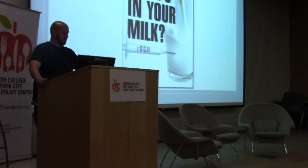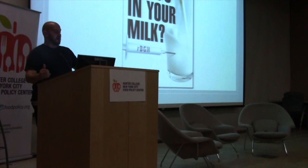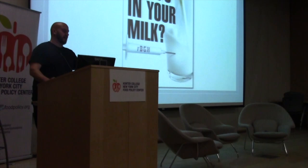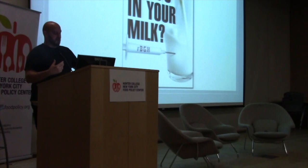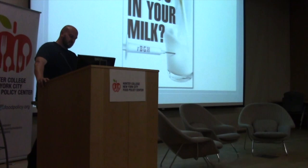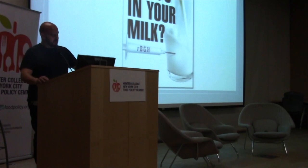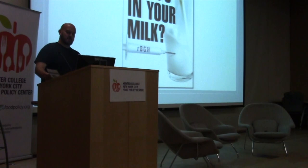Recombinant bovine growth hormone is one of many steroids used in food production. It's banned in the EU, Australia, Japan, New Zealand, and Israel — in many cases for nearly two decades. The health risk is not from elevated levels of the bovine growth hormone itself, but rather from IGF-1, a hormone that normally helps some types of cells grow. There are conflicting studies showing a causal relationship between tumor growth and heightened levels of prostate, breast, colorectal, and other cancers. We do know it makes the cows very sick, and yet the American Cancer Society has no official position on its use.